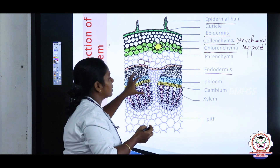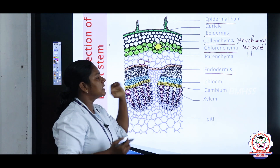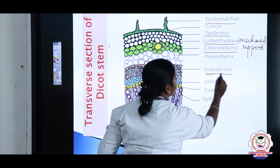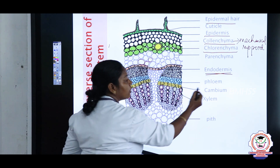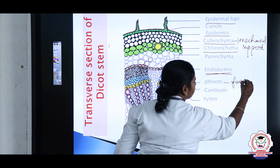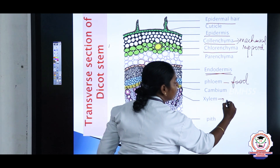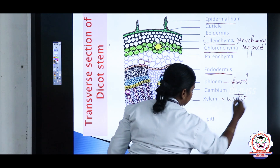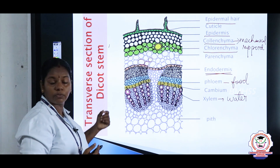The parenchyma cells allow the passage of food substances from the outer surface to the inner xylem and phloem. Next to the cortex, the layer surrounding the vascular bundle is called endodermis. The function of phloem and xylem is transport of water. The centermost portion is the pith.